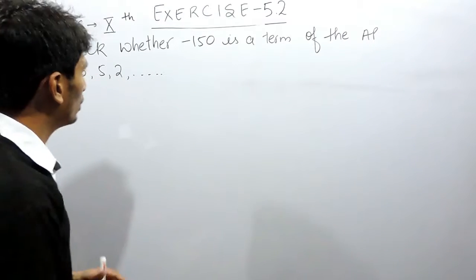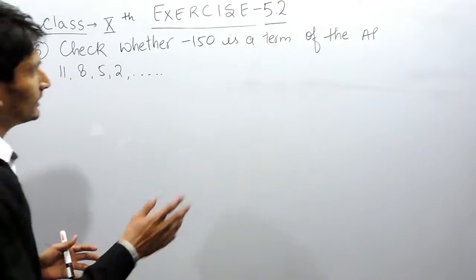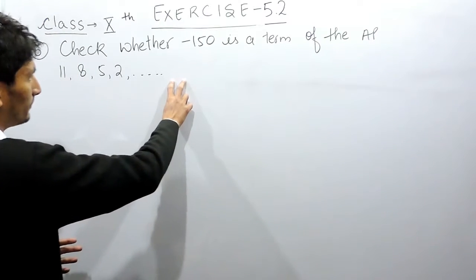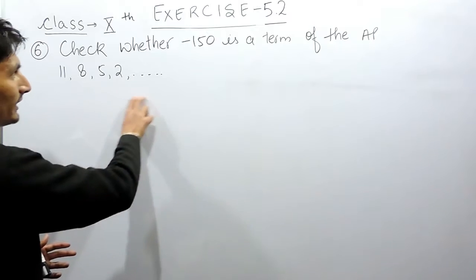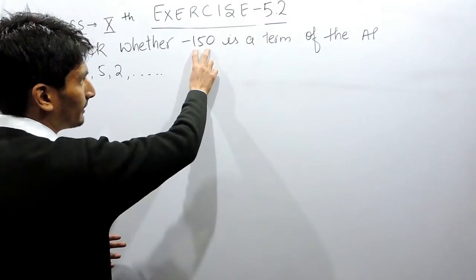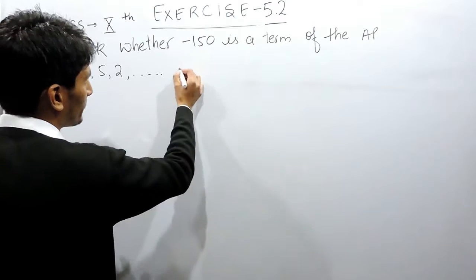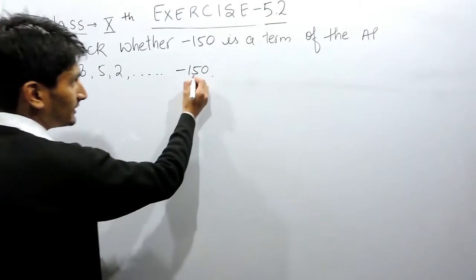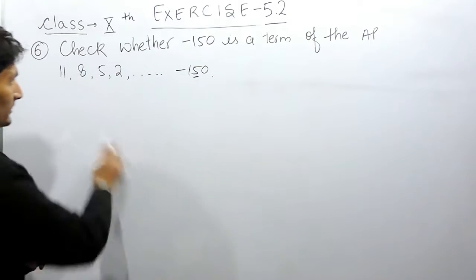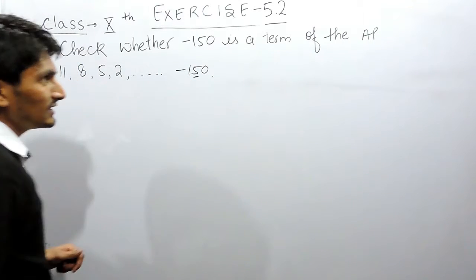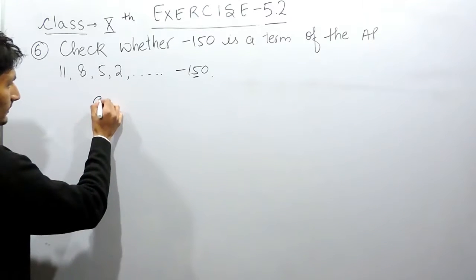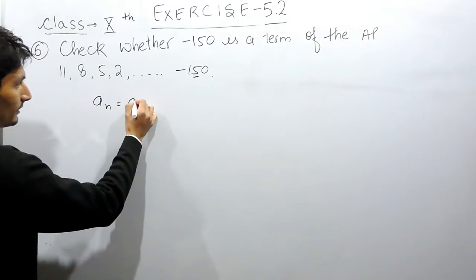So how can we check? Supposing that this is the nth term, we don't know how many terms are there in this AP. So we can assume this term as the nth term, and if this is the nth term of this AP, it must satisfy the conditions for nth term.